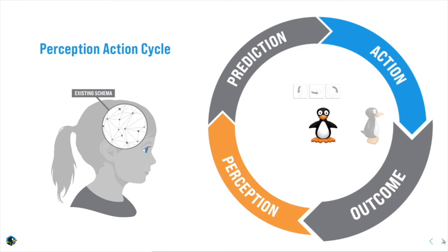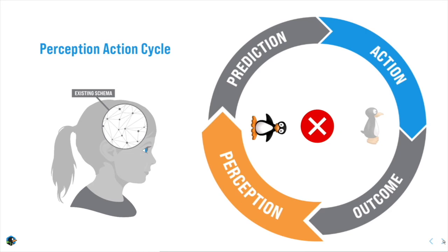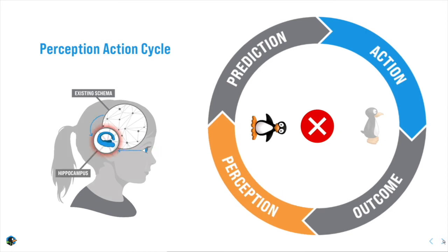But this time Gigi does not get across the screen. Notice, again, I get to see precisely why I was wrong. I perceived the outcome, and in the hippocampus, my perception is compared to my prediction.